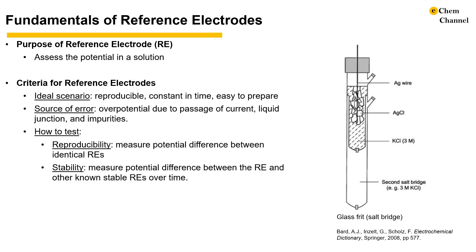To test whether a reference electrode is suitable for your electrochemical system, we can insert two reference electrodes of the same kind into your electrolyte, connect one as the reference electrode and the other as the working electrode. If the open-circuit potential is negligible — meaning the potential is in the microvolt range — the reference electrode is reproducible. Similarly, repeating the experiment with a reference electrode candidate and an established reference electrode and performing a long open-circuit potential measurement will tell us whether the candidate is stable over time.